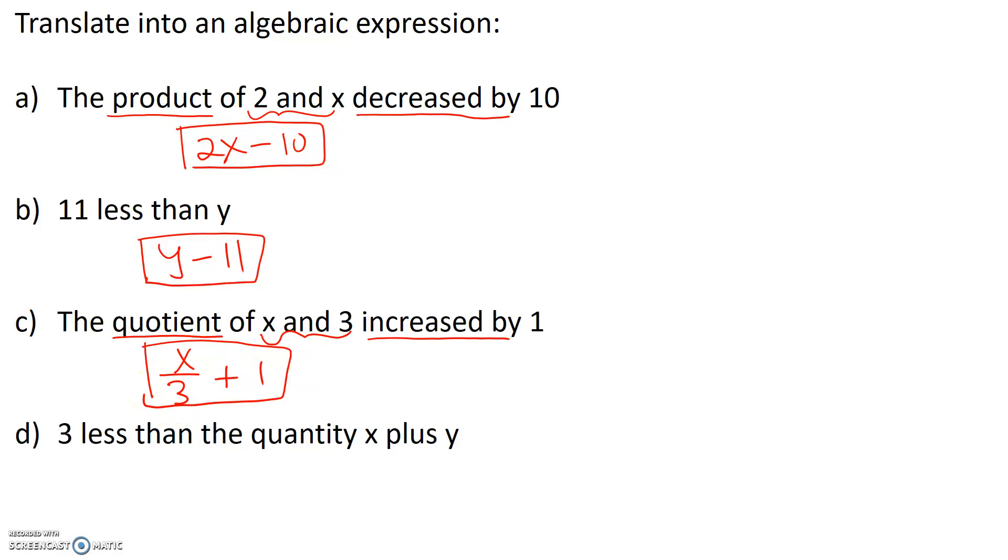3 less than. If 3 is less than something, that something will come first and the 3 will come second. So 3 less than the quantity x plus y—for quantity we will use parentheses—would translate to x plus y minus 3. Notice that in this case, 3 is less than the quantity x plus y.